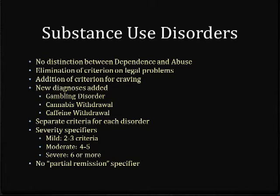For substance-related disorders, there is no longer any distinction between dependence and abuse — it's only one disorder: substance use disorder. They took the seven criteria for dependence and merged them with three of the four criteria for abuse, eliminating the legal problems criterion, which is reasonable since legal problems may have more to do with how diligently police enforce the law in a particular community than with how severe the problem actually is. They added a criterion for compulsive use to bring it more in line with the ICD-10.